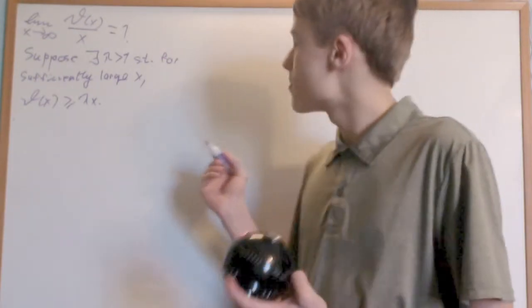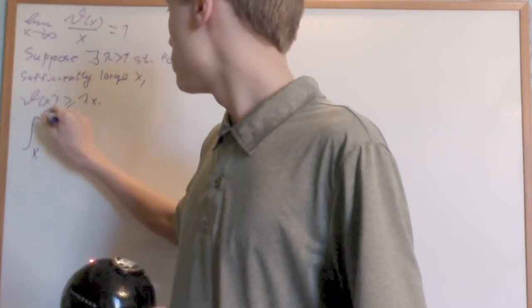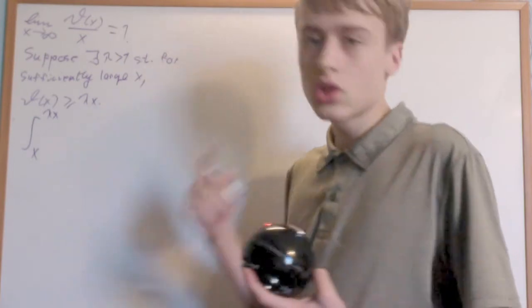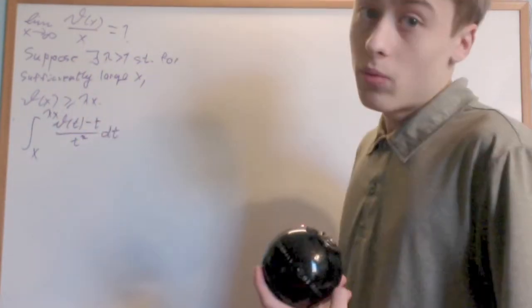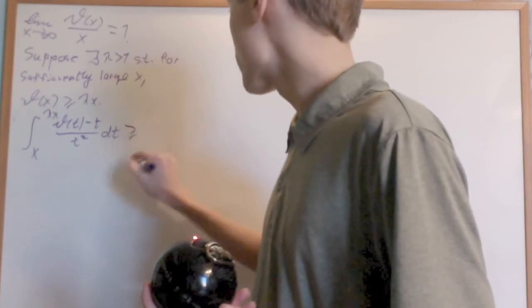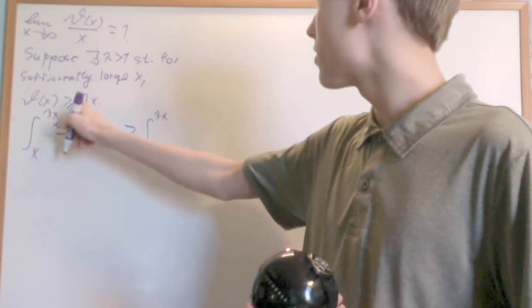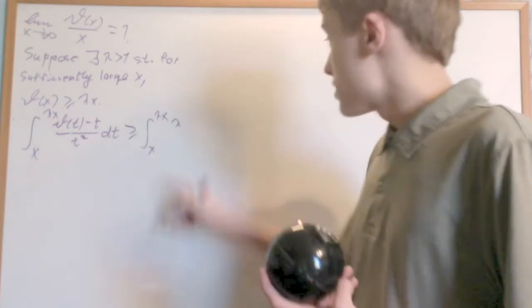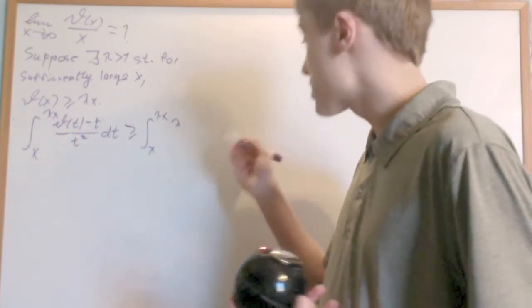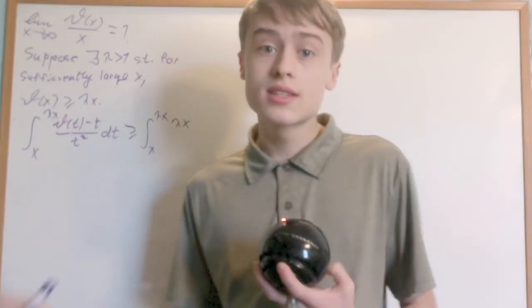I'm going to reach a contradiction from this. Namely, consider the integral from x to λx of θ(t) minus t over t² dt — the integral from last time. Now, this has to be bigger than or equal to the integral from x to λx with θ(t) replaced. Since θ(x) is non-decreasing, instead of putting t (which is changing over the interval), I can just put x, because the inequality still holds.